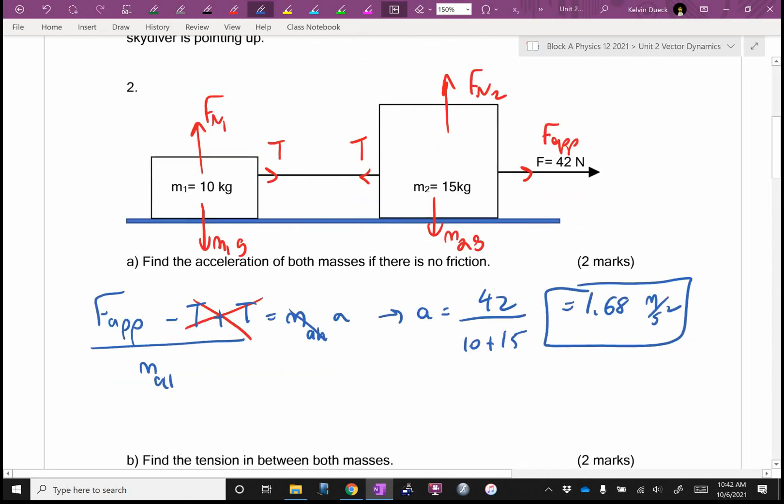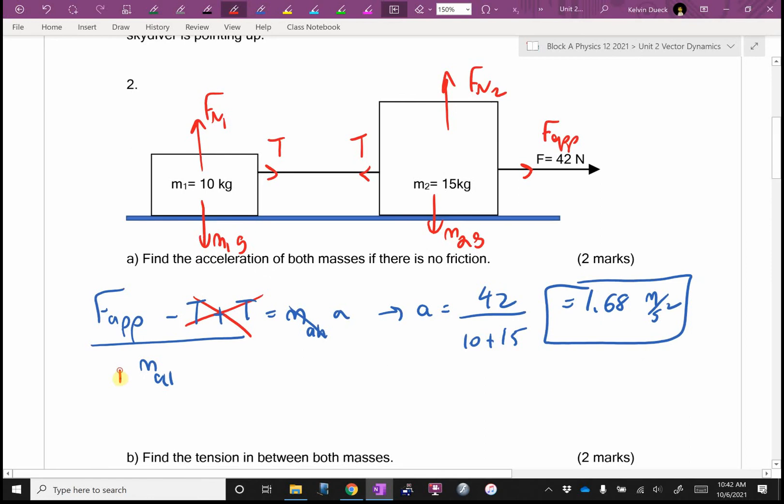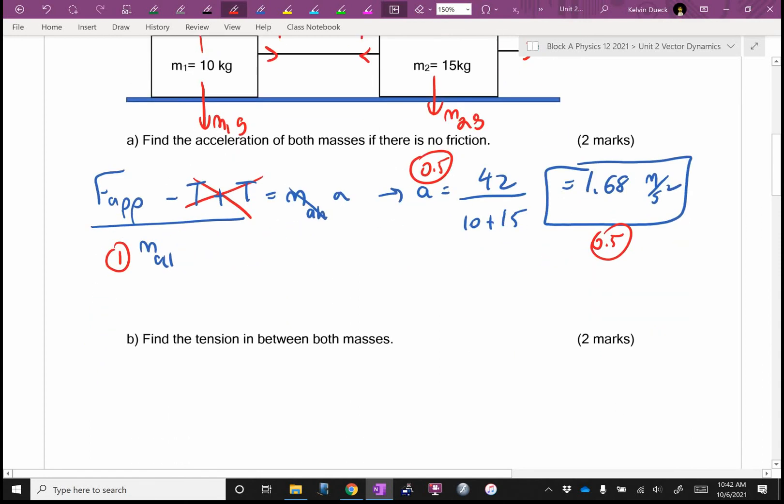2 marks if you got that. Otherwise, I would give you 1 mark if I saw the equation, half mark for the numbers and a half mark for the answer. Find the tension. You could use mass 2. I'm going to use mass 1 because for mass 1, tension equals M1A. There is no loser.